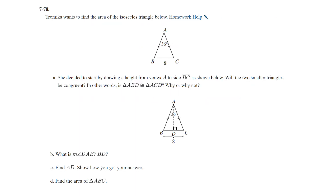Question 78: Tromeka wants to find the area of the isosceles triangle below. Part A: she draws the height from vertex A to side BC, creating triangles ABD and ACD. Will they be congruent? Yes — they are right triangles, the hypotenuse of both is congruent, and they share leg AD. So triangle ABD is congruent to triangle ACD by hypotenuse-leg congruency.